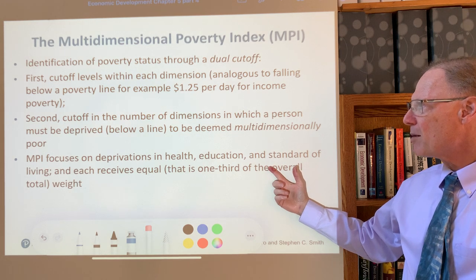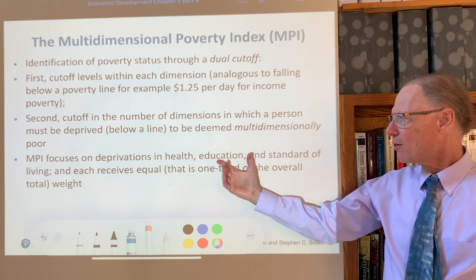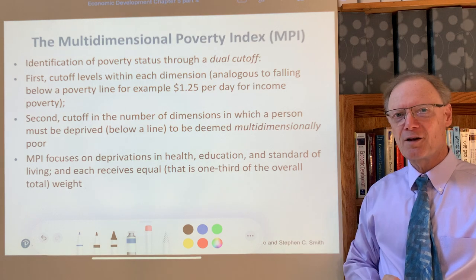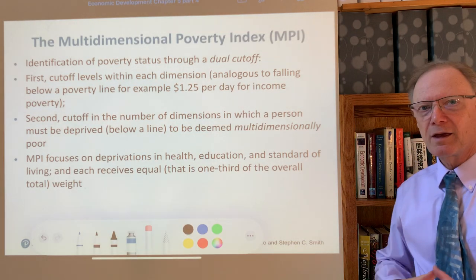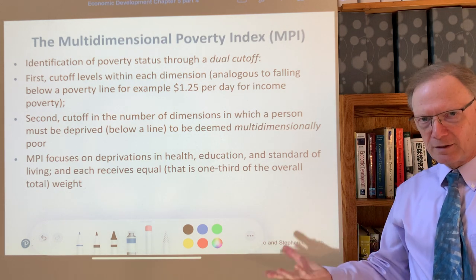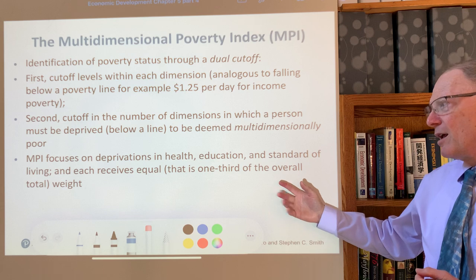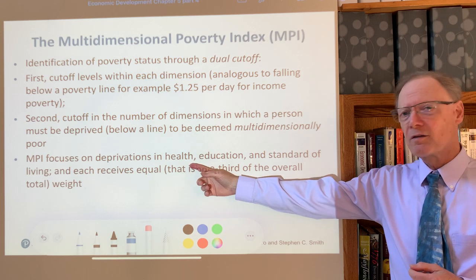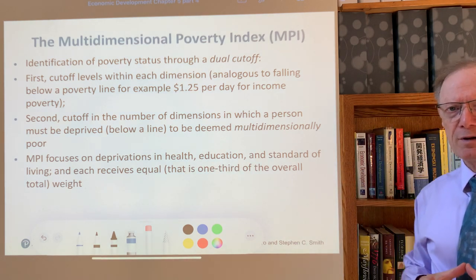The MPI specifically focuses on three sets of deprivations. One is the indicators in the health dimension, one in the education dimension, and one in standard of living — broadly, the different standards of living we looked at when examining living levels in different countries around the world. Each of these three dimensions gets equal weight, meaning one-third of the overall poverty deprivation weight goes to deprivations in health, a third in education, and a third in standards of living.